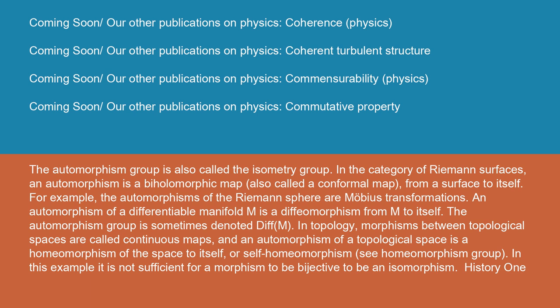In topology, morphisms between topological spaces are called continuous maps, and an automorphism of a topological space is a homeomorphism of the space to itself, or self-homeomorphism. See homeomorphism group. In this example, it is not sufficient for a morphism to be bijective to be an isomorphism.